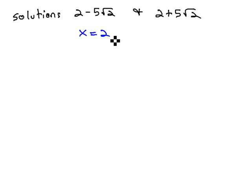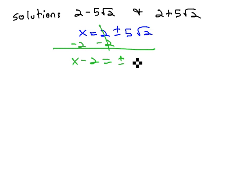x equals 2 plus or minus 5 square root of 2. This time, the square root is not alone, but as we found out with solving equations, we can isolate that square root term by first subtracting the 2 from both sides, giving us x minus 2 equals plus or minus 5 square root of 2.